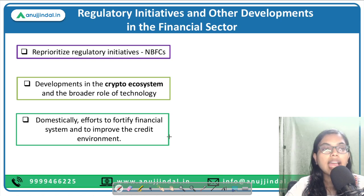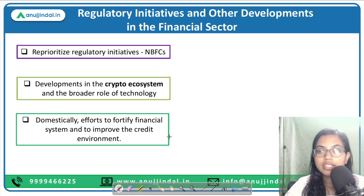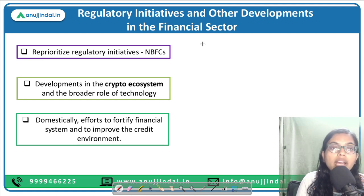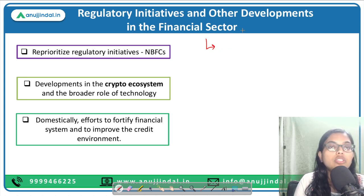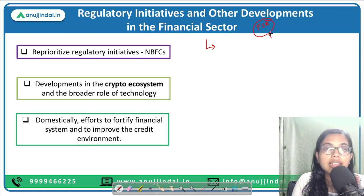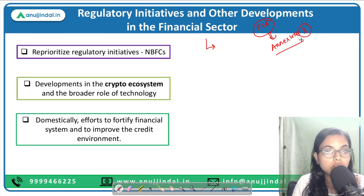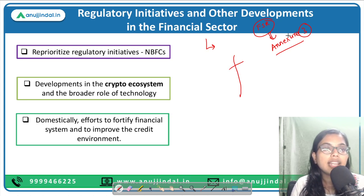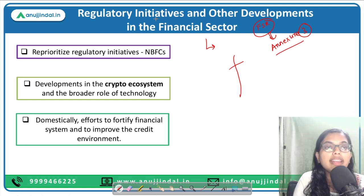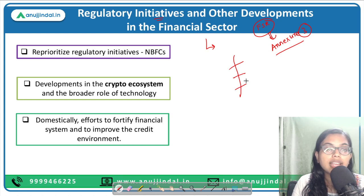The third major category is the Regulatory Initiatives and Other Developments in the Financial Sector. There is an annexure to this document provided by RBI — Annexure 3. You should download Annexure 3 and go through it. This Annexure 3 talks about all the regulatory initiatives that have been taken by the financial sector regulators — as we discussed, there are six financial sector regulators: RBI, SEBI, IRDAI, PFRDA, IBBI, and IFSCA.